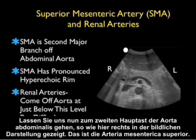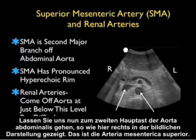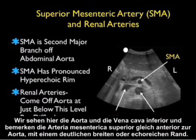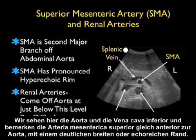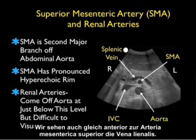Now let's move on to the second major branch of the abdominal aorta, the superior mesenteric artery. Here we see the aorta and IVC, and notice the superior mesenteric artery just anterior to the aorta with a pronounced bright or hyperechoic rim. We also see the splenic vein arching just anterior to the SMA.